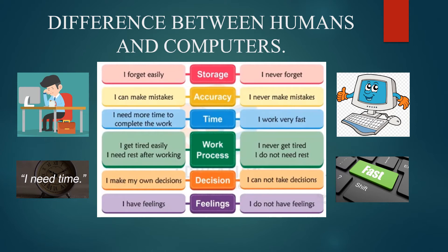The second point is accuracy. The human says: I can make mistakes. When we do a calculation, we can miss a number or forget a decimal point in a big answer — so we make little mistakes. The computer says: I never make mistakes. The third point is time. Humans need more time to complete work, while the computer works very fast.